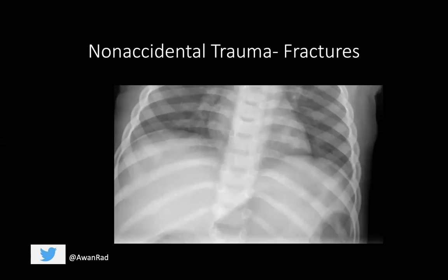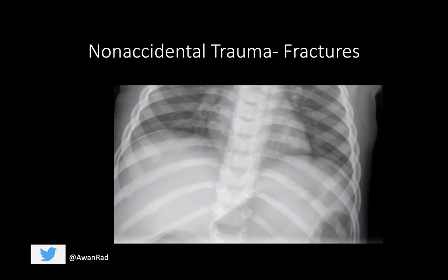Another common manifestation is fractures at different stages of healing — you may have an acute fracture, a subacute fracture, a chronic fracture, and multiple fractures. In the ribs, you can see a lucency indicating a fracture with cortical thickening and callus — that's a subacute fracture, because you can still see the lucent fracture line but there's new bone formation. Right under it, you have a chronic healed fracture with cortical thickening and callus but no lucent fracture line. Those constellation of findings suggest non-accidental trauma, because you have different fractures at different stages of healing.